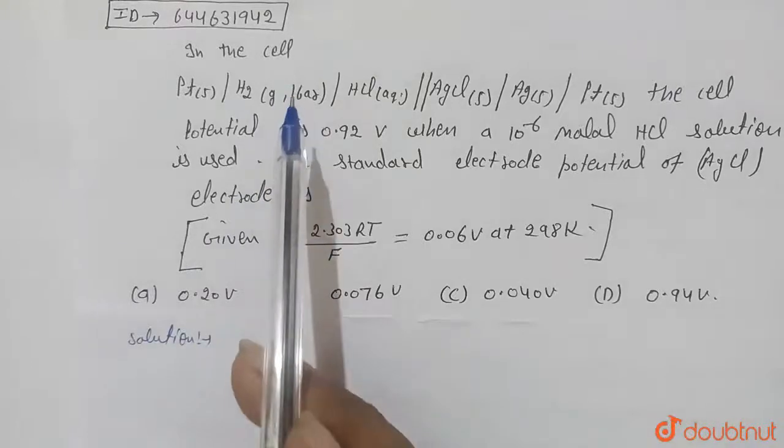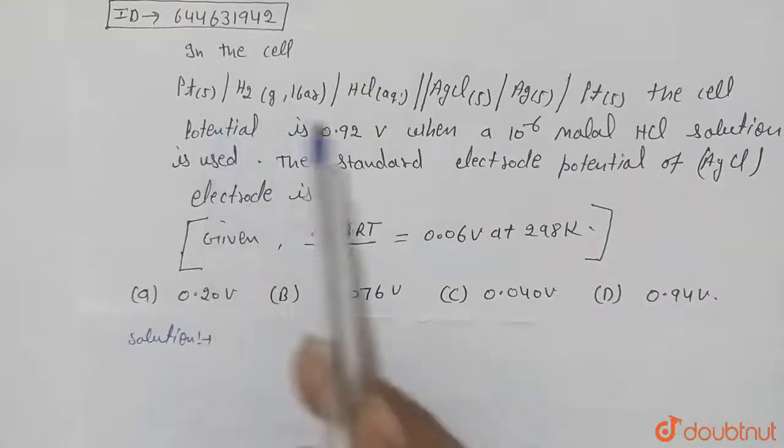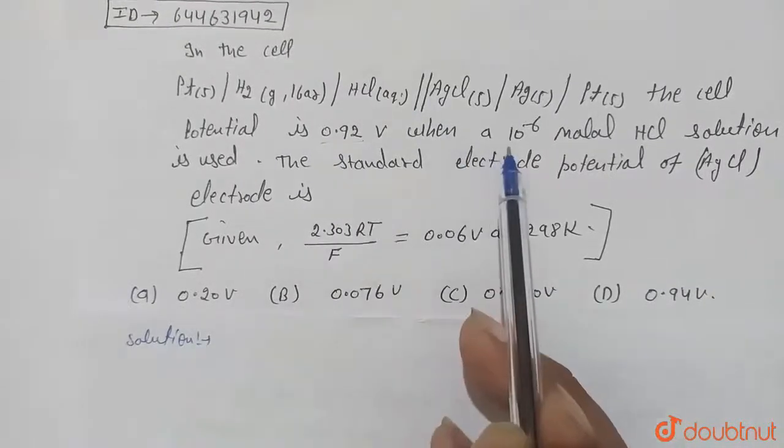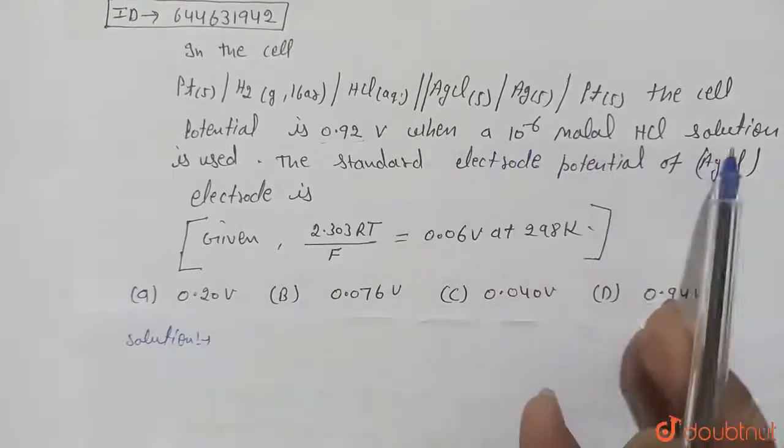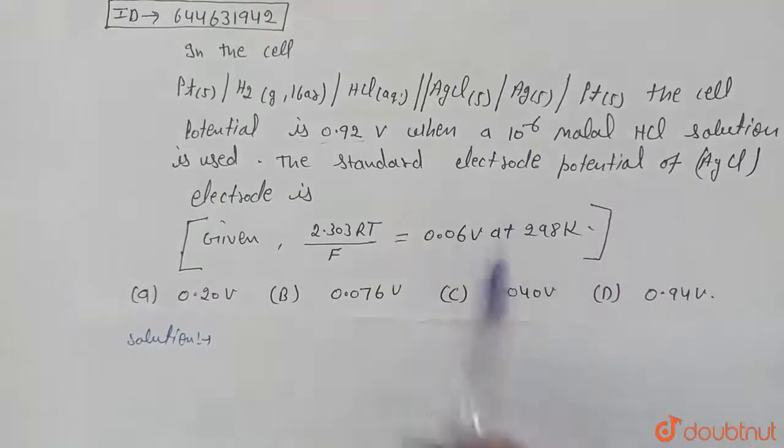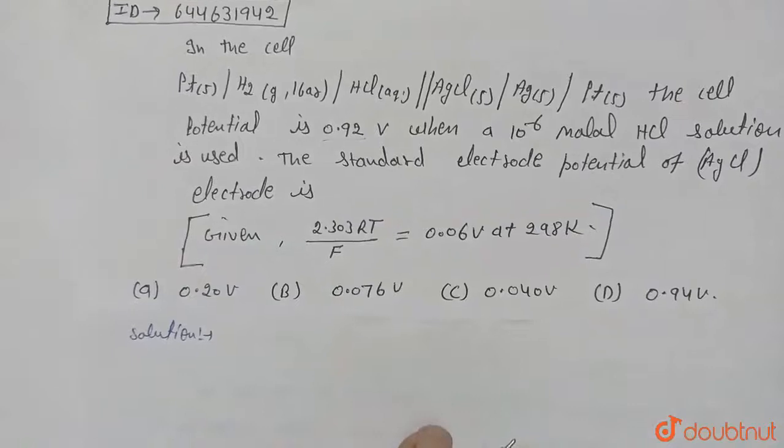The cell representation will be given. The cell potential is 0.92 volt when 10 raised to power minus 6 molar HCl solution is used. A standard electrode potential of HCl will be found out. Okay, now according to the question...